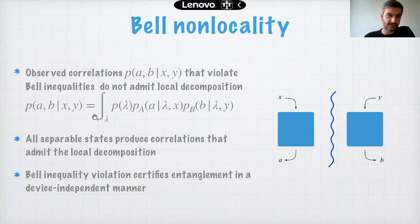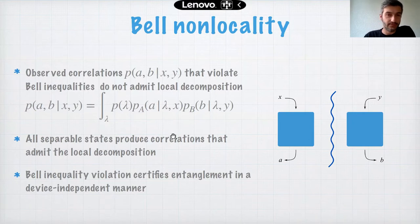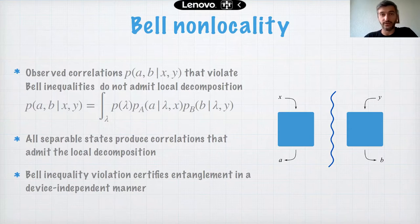Correlations violating Bell inequalities do not admit a local decomposition, where Alice outputs a and Bob outputs b based on a shared hidden variable and their respective inputs. Moreover, all separable states produce correlations that admit this local decomposition. So Bell inequality violation can be seen as a device-independent certificate of entanglement, without trusting the system dimension or any inner functioning of the measurement devices.